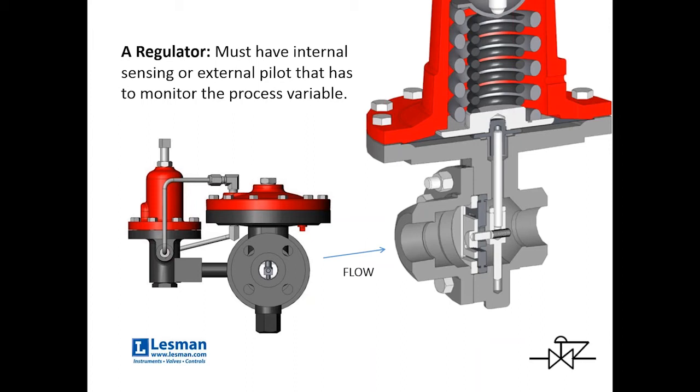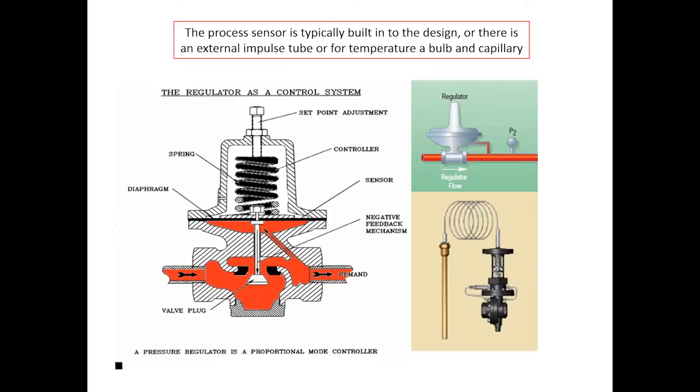So, a self-contained regulator, mechanical, no controller, no field device, has to get input from the process. And it either happens internally or sometimes there is an external pilot that will have access to the process. So, in this particular slide, it's a cutaway of a classic pressure regulator and if you can see the video here, the red represents where the process fluid is allowed to go. And you'll notice internally over to the right, there's a 45 degree path that allows the downstream pressure to interact with the diaphragm in the regulator. So, that little slice of pie there is how we're picking up the process variable.